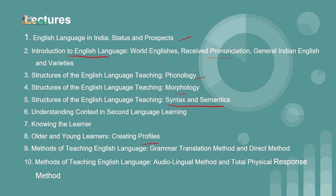Emphasis will be given on demographic information such as gender, age, ethnicity, location, and learners' characteristics such as styles and preferences. In the ninth lecture, we will get to know about the methods of English language, and this will be another module. In this module, we will cover grammar translation method and direct method.